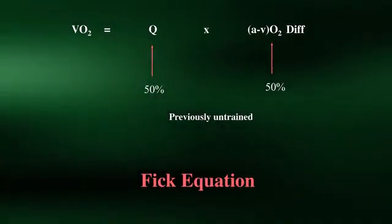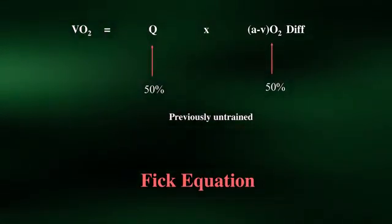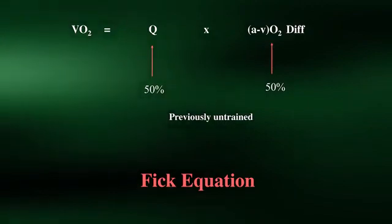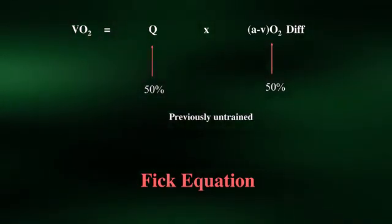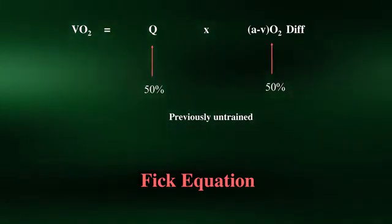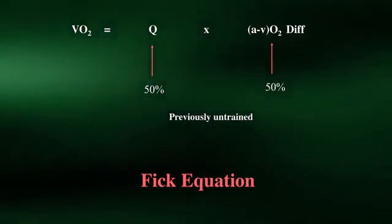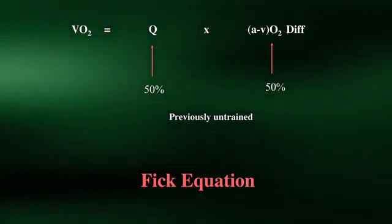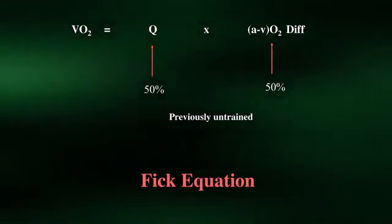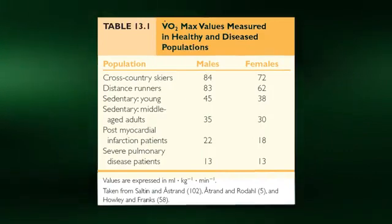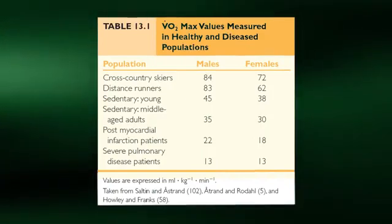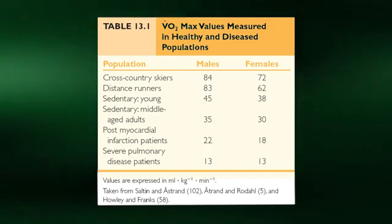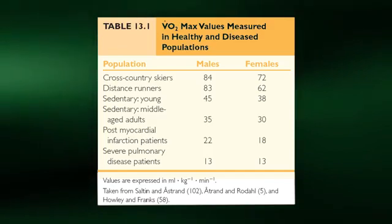In previously untrained individuals, the increase in VO2 max with training is due to an equal increase in maximal cardiac output and maximal arterial venous oxygen difference. A range of 15 to 40% increase in VO2 max can be achieved with training in previously untrained individuals. For already trained individuals, increasing training volume or intensity will produce only modest increases in VO2 max as it is already high to begin with. Not surprisingly, cross-country skiers who recruit a large muscle mass while training — both lower and upper body — demonstrate the highest values for VO2 max. Distance runners are a close second, with values approximately twice as great as their younger sedentary counterparts.